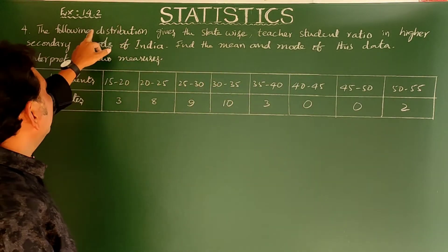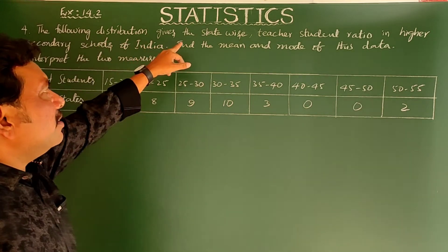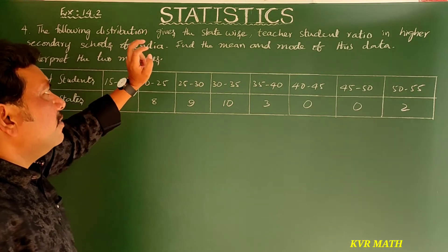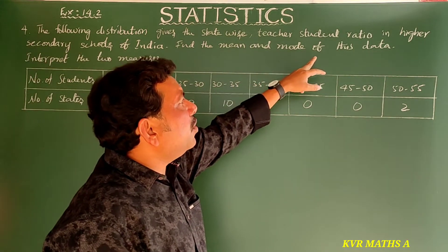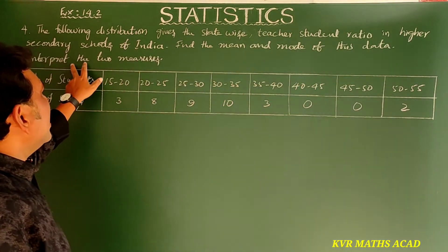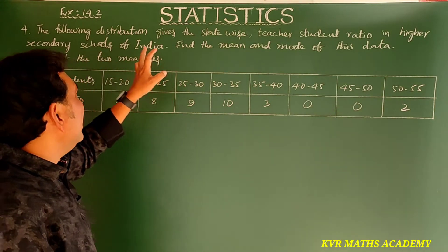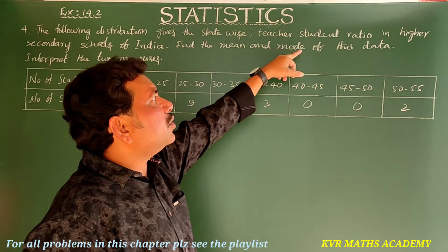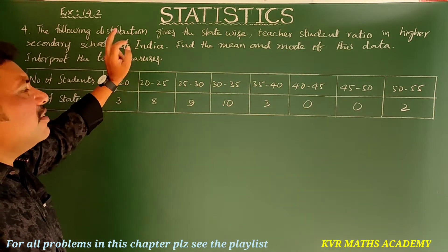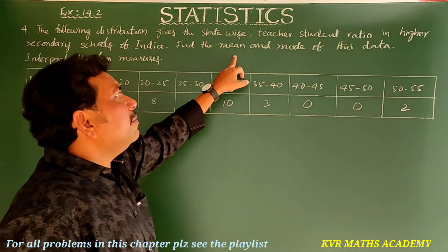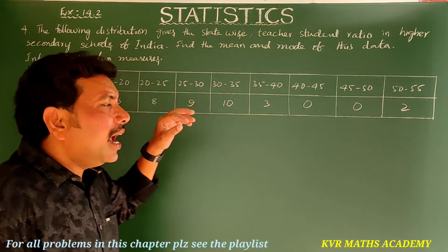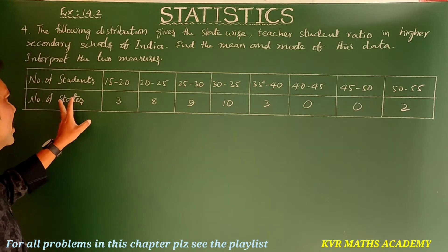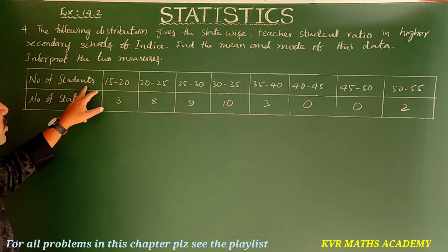This is the fourth question in Exercise 14.2. The following distribution gives the state-wide teacher-student ratio in higher secondary schools of India. Find the mean and mode of this data and interpret the two measures. The table has class intervals for number of students and corresponding number of states.